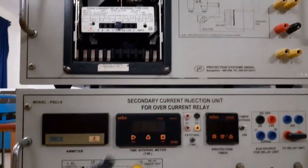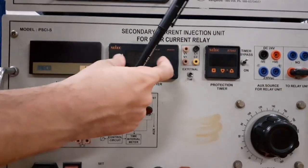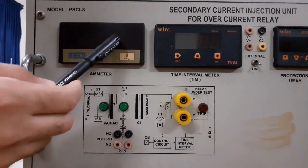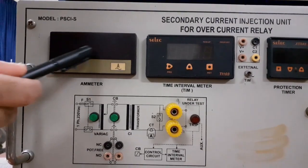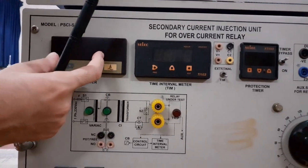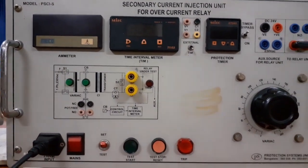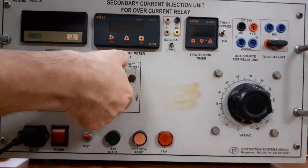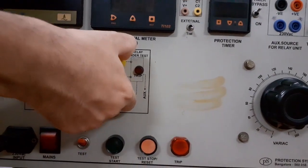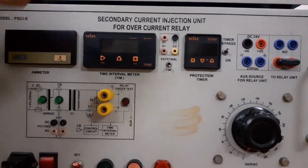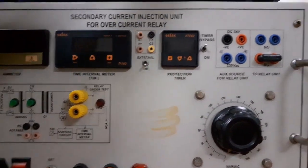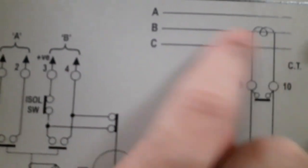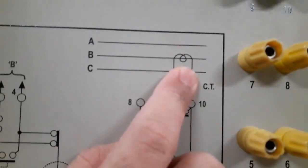You can measure the tripping time using the timer — there is a display. We can measure the current using this ammeter; we have one inbuilt meter inside the kit. Here we have the CT — that is for current measurement. We can measure high current and it will be converted into a measurable value of current. This is the CT, or current transformer, used for measurement purposes. It is also known as either a sensor or transducer.